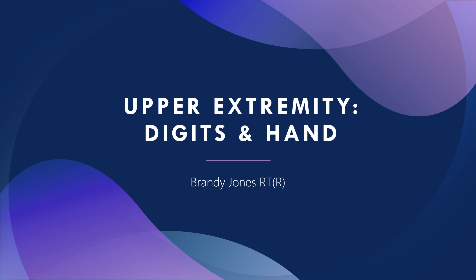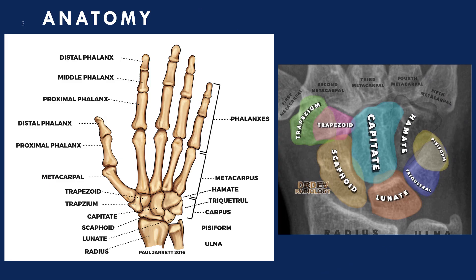Upper extremity digits two through five and hand with Brandy Jones. Let's review some anatomy. First, we have the distal phalanx, the middle phalanx, and the proximal phalanx for digits two, three, four, and five. The first digit has a distal and a proximal phalanx only.